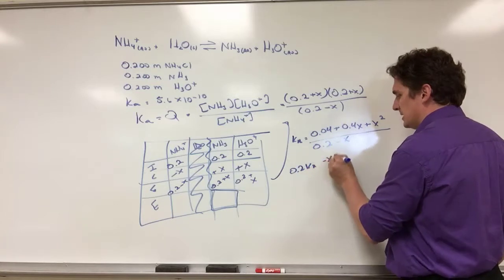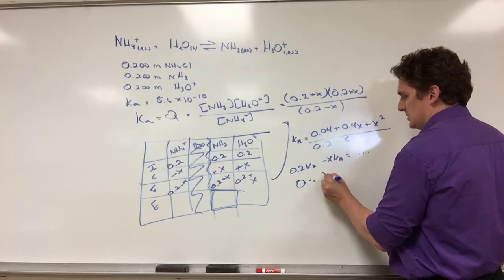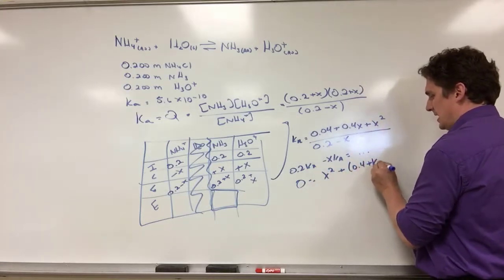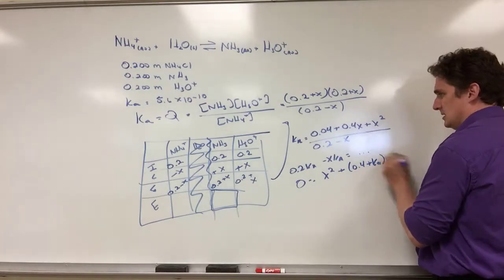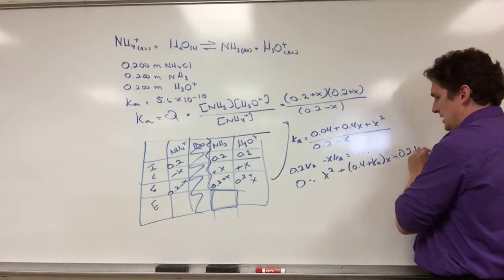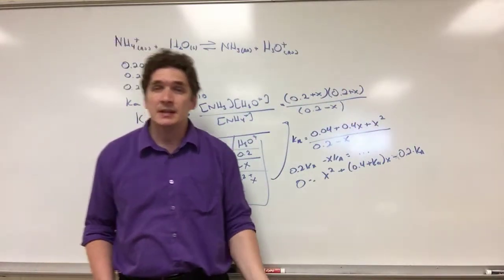And if I rearrange I get 0.2Ka minus X times Ka equals everything. And when I rearrange it I get X squared plus 0.4 plus Ka times X, plus or minus 0.2 times Ka. It's just a big quadratic equation I'm being asked to solve. That's it, that's what makes these hard problems.